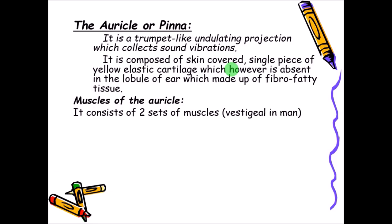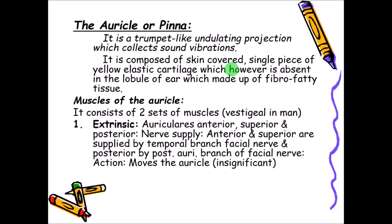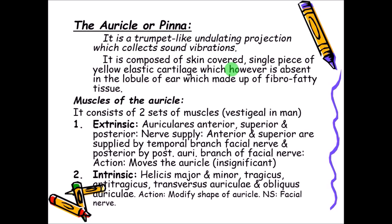Lower animals can twist and turn their auricle because of these muscles. The muscles are divided into extrinsic and intrinsic types. Extrinsic muscles are outside the auricle and twist and turn it. The extrinsic muscles are auricularis anterior, superior, and posterior. The nerve supply of auricularis anterior and superior is by the temporal branch of the facial nerve, and the auricularis posterior is supplied by the posterior auricular branch of the facial nerve.